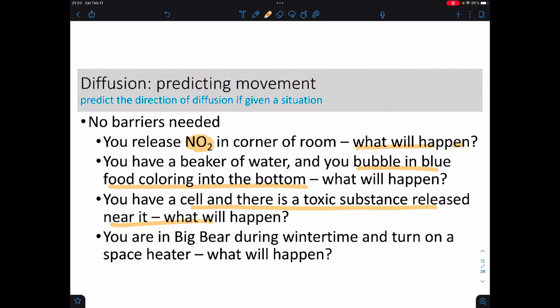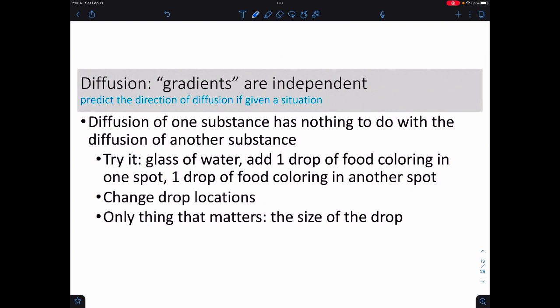You're in Big Bear during the wintertime and you turn on a space heater. What will happen? The heat is going to go from the space heater and eventually fill up the room. Assuming it's not leaking out of the house or the cabin or wherever you are. But it will spread out. That's how heaters work. They follow diffusion. So this one here is an example of actually using energy. Whereas these other ones talk in terms of concentration. But if we look at things like wind, wind is kind of diffusion. It's just we're using pressure instead.